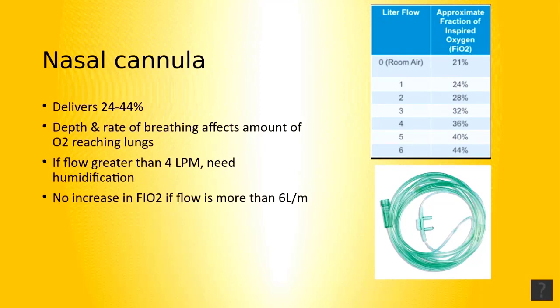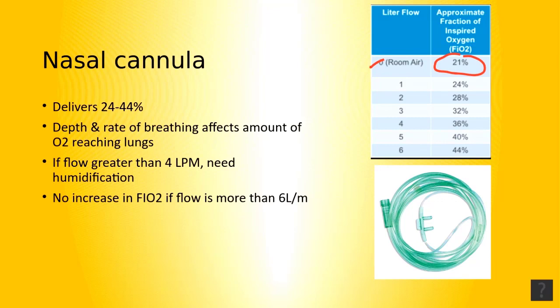Every time we increase the flow by 1 liter, we're going to have a consequential increase of FiO2 by 4%. When we breathe room air, we have a 21% FiO2, or to be exact, 20.88%. If we were to deliver 1 liter of oxygen into the patient through a nasal cannula, it increases the FiO2 by 4%, so 1 liter is intended to deliver approximately 24% FiO2.